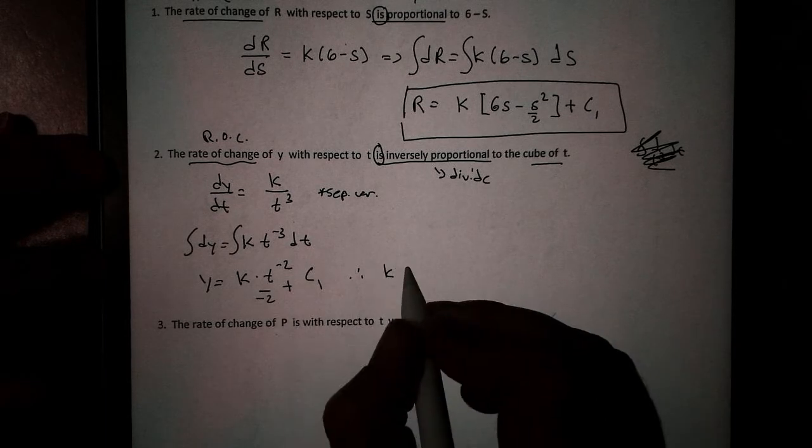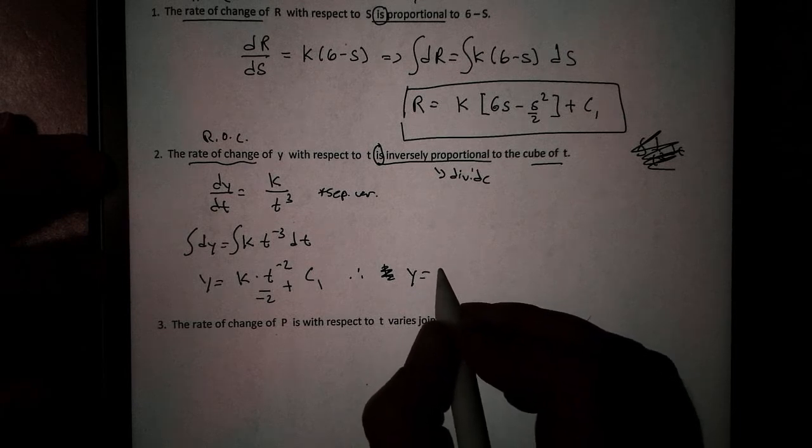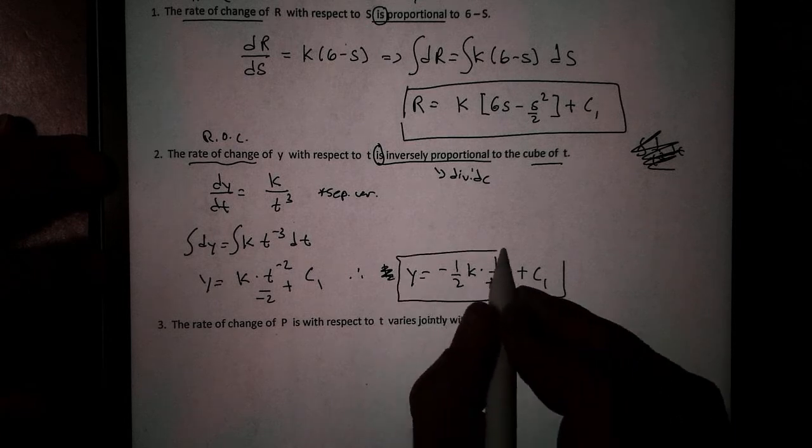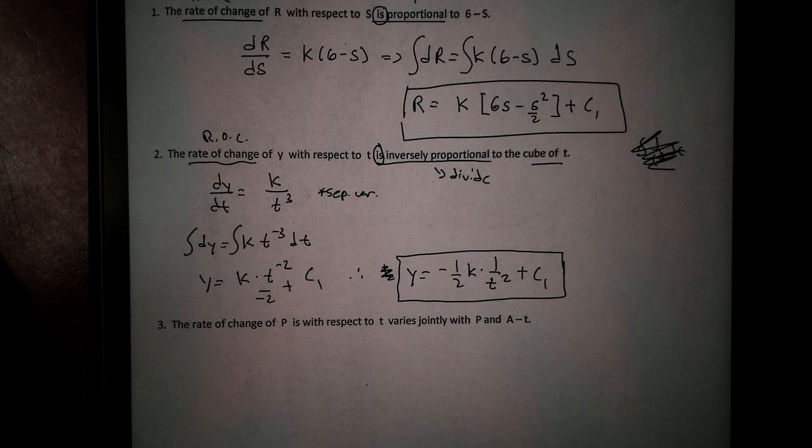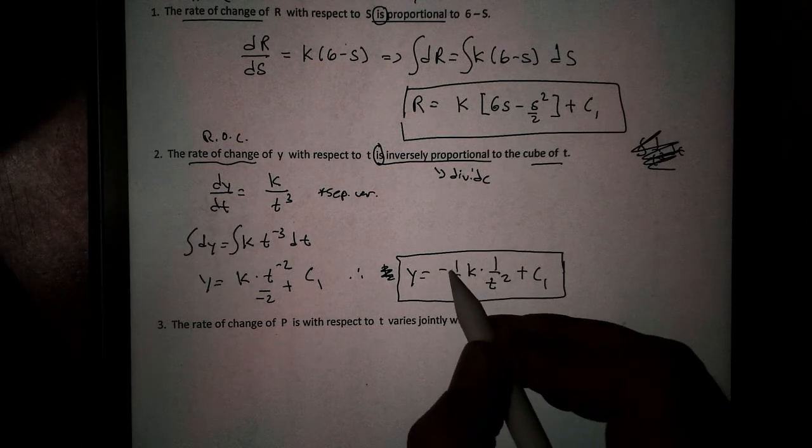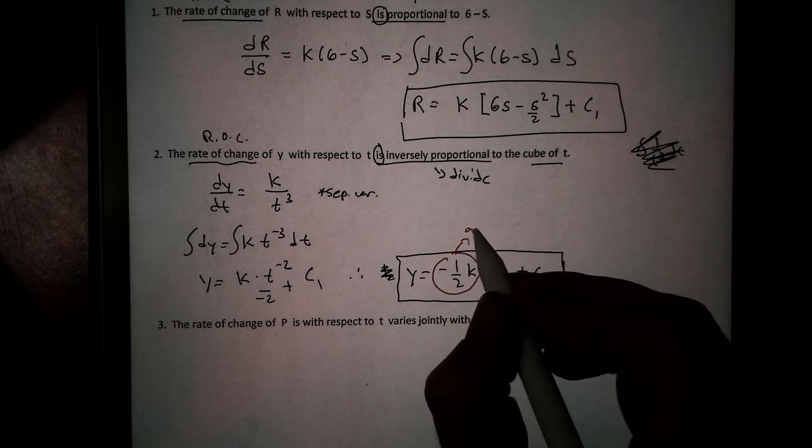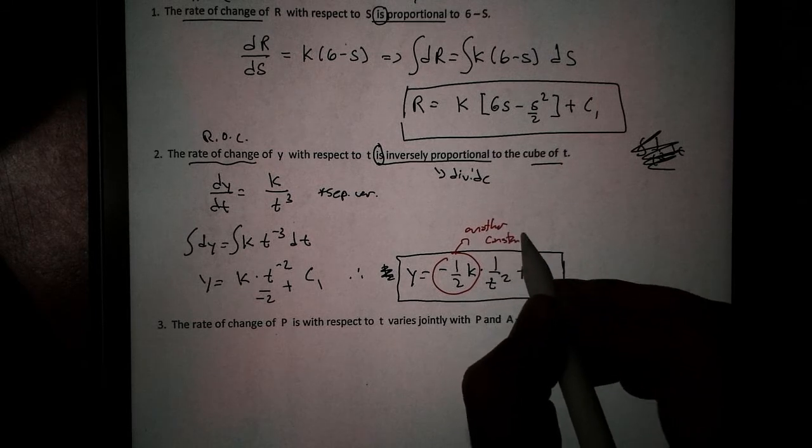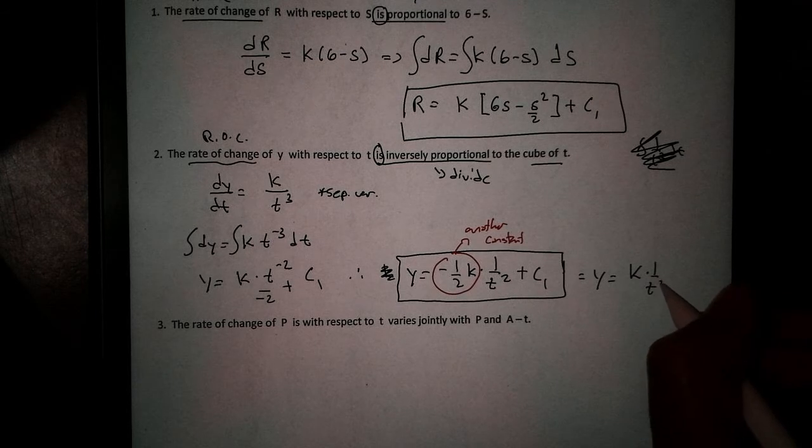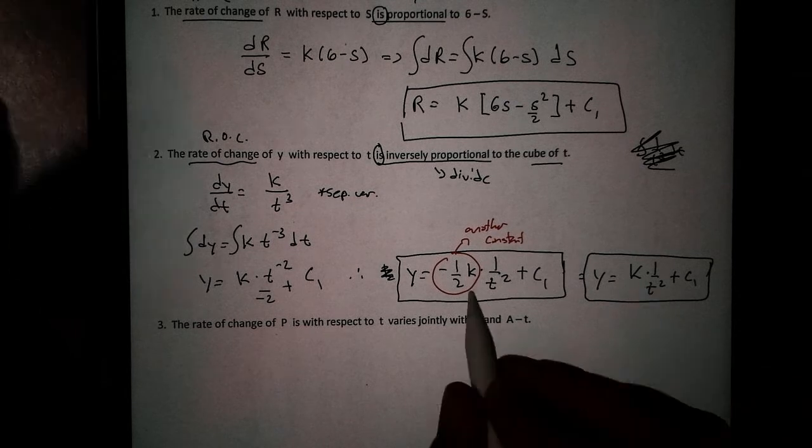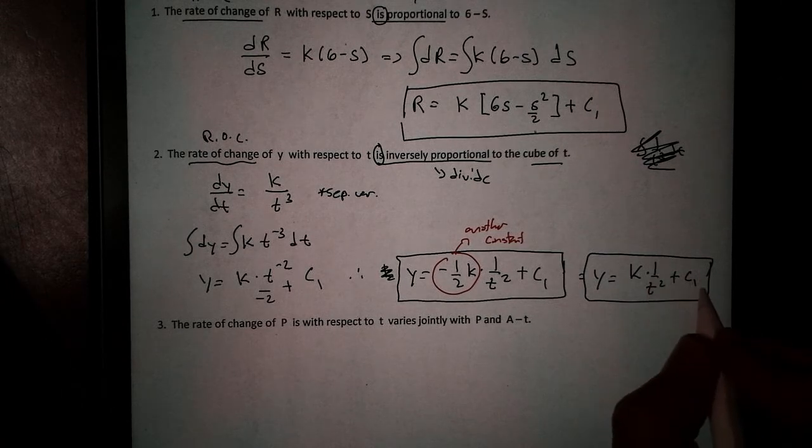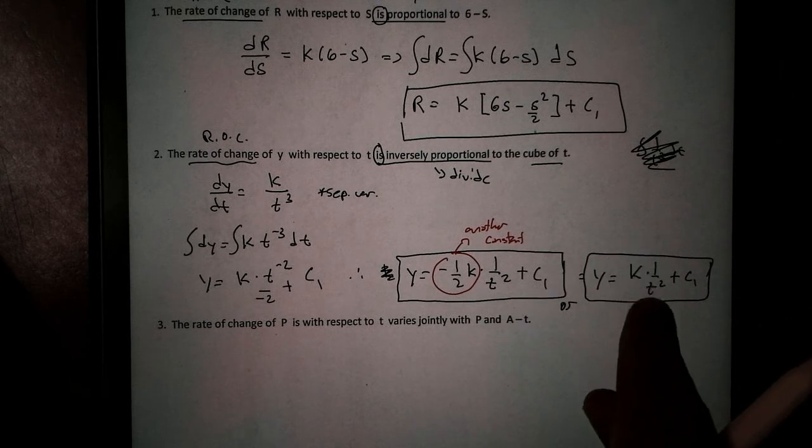We don't like negative exponents, so I'm going to write this as Y equals negative 1 half K times 1 over T squared plus C1. Now this is okay to leave it like this. However, we talked yesterday—K is a constant, and if I take a constant, multiply it by 1 half, I'm just going to get another constant. And I can use that to simplify this. So I can rewrite this as Y equals just K times 1 over T squared plus C1. I don't write K2. We just leave this as K times 1 over T squared plus C1. And both are acceptable. This is a lot easier to work with, which we're going to find out tomorrow.